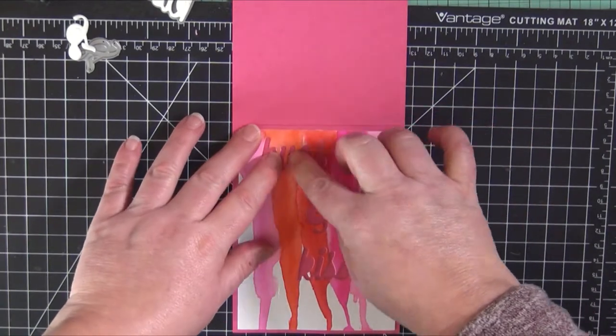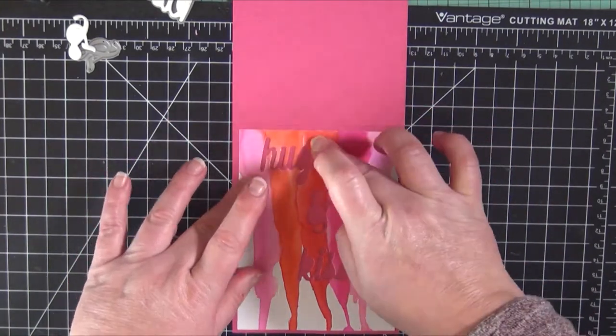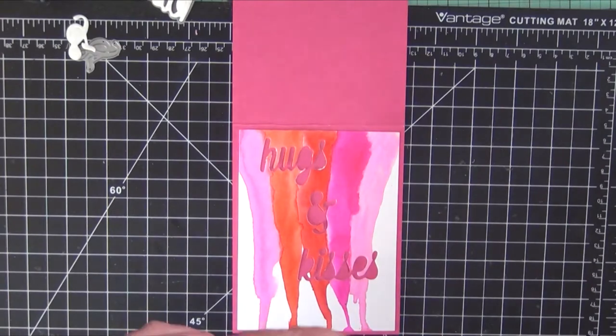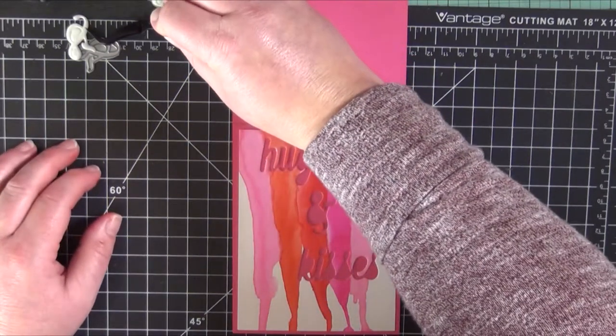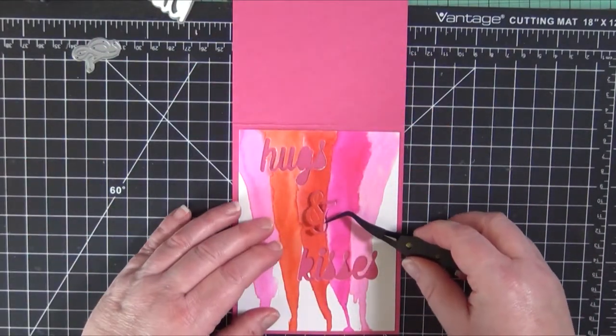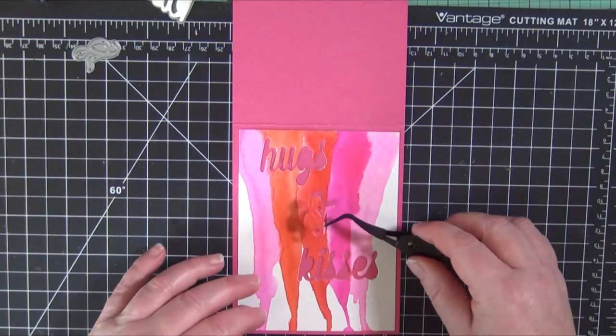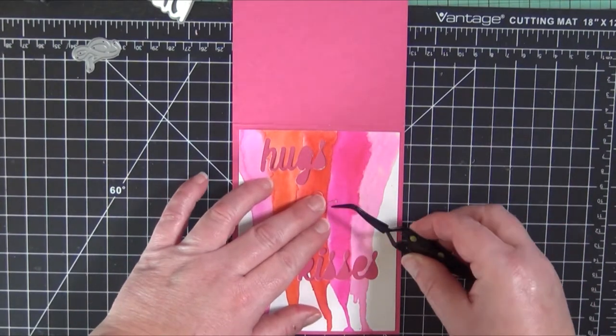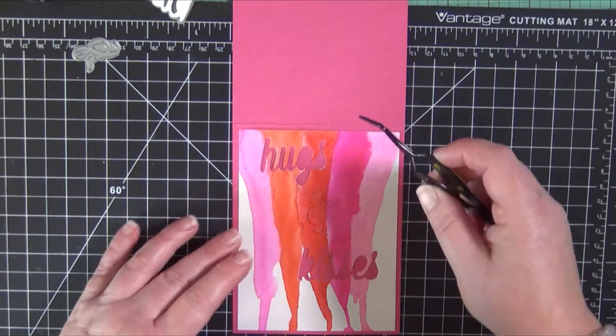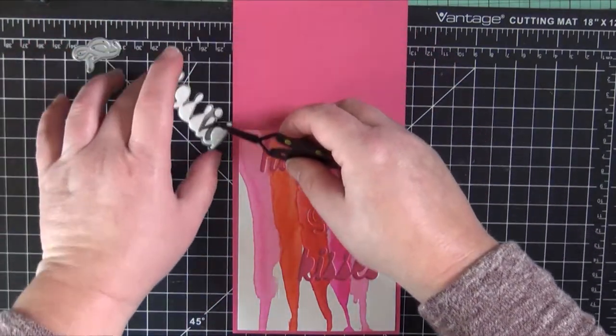I'm just using my fingers to tap down around those words. Make sure everything is nice and secure. Then I'm going to pick up the previously die cut words and ampersand and lay them right back into where I cut them from the front panel.